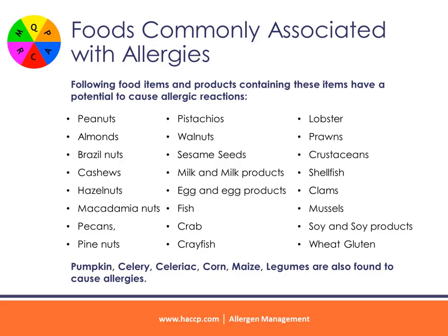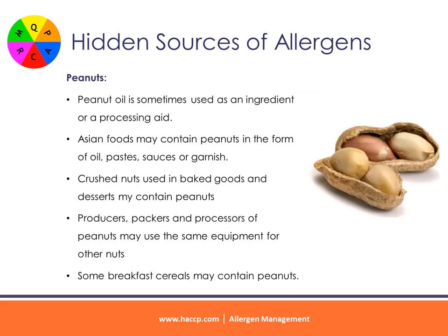It is important that products containing even small amounts of the allergens listed above are identified with appropriate labeling to ensure allergen sufferers can avoid relevant foods. Other foods such as pumpkin, celery, celeriac, corn, maize, and legumes are also often found to be food allergens.